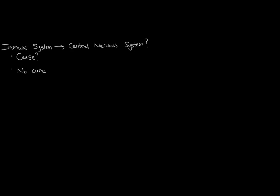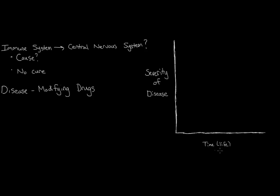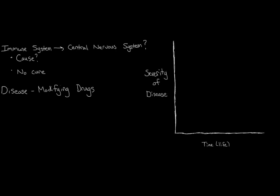A really common class of drugs that people take are the disease-modifying drugs. So how do these act? Well, remember that in multiple sclerosis, we can track the way that the disease progresses over time. On the x-axis, we have time in terms of the lifespan of the individual. And on the y-axis, we have the severity of the disease, that is, how much damage the brain accumulates.